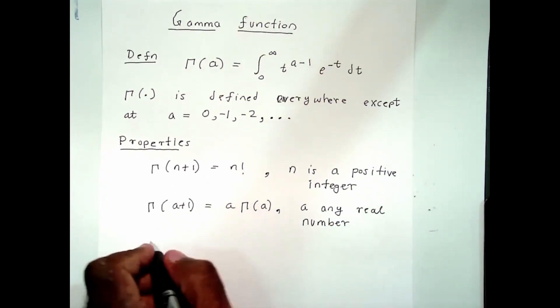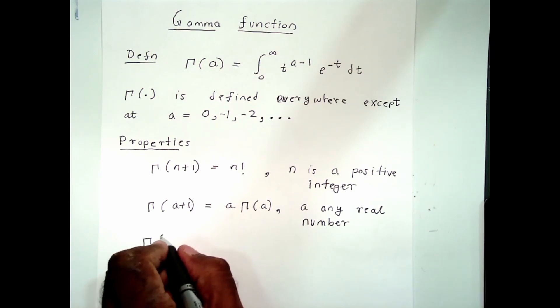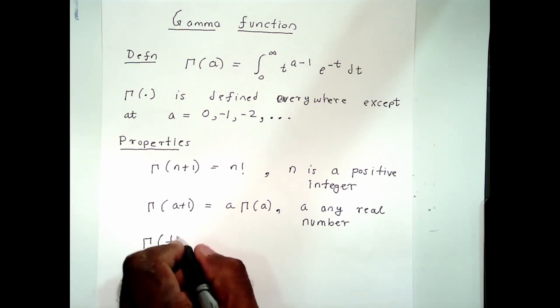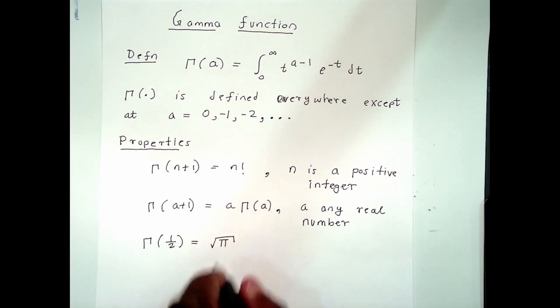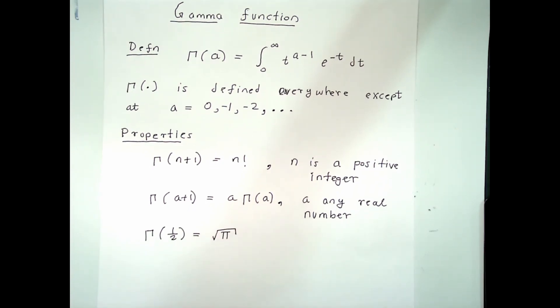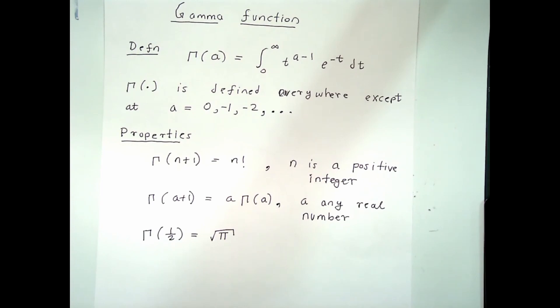And another property is that gamma at one-half is equal to the square root of pi. So these are some properties of the gamma function.